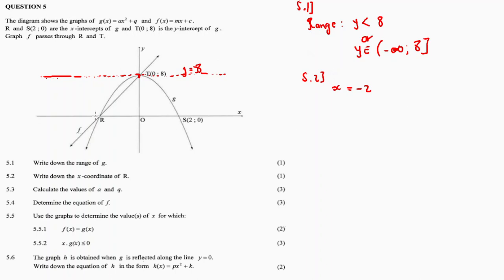5.3: Calculate the values of a and q. We're going to use g of x, which is equal to ax² + q. But q I do know is plus 8. Yes, q is equal to 8. Q must be the same as the y-intercept, so the y-intercept in our case is 8, so hence q equals 8.